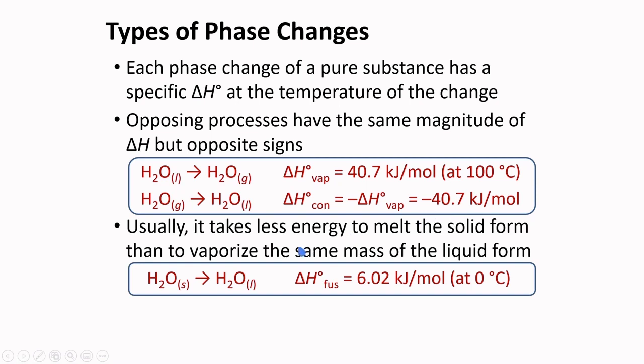Usually, it takes less energy to melt the solid form than to vaporize the same mass of the liquid form. The molar heat of fusion of water is 6.02 kJ per mole at 0 degrees Celsius. This is significantly lower than the molar heat of vaporization. The difference in these values tell us that the conversion of liquid to gas for a certain material requires more energy than the conversion of the solid material to liquid.